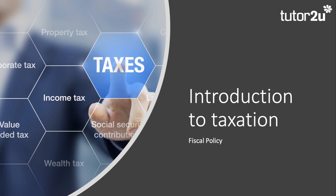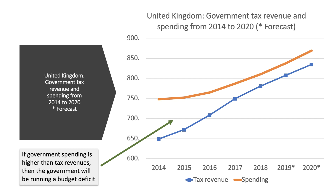Welcome to the second in our series of videos looking at aspects of fiscal policy. In the first video we focused on government spending, and in this video we'll look at taxation. This chart shows the orange line — government spending heading northwards of 850 billion pounds, likely much higher in 2020 with coronavirus. The blue line is taxation, all tax revenues coming in from different types of taxes. Still climbing, but well below government spending, so the government is running a budget deficit and will need to borrow money to fund that. The budget deficit is the topic for our third video in this series.